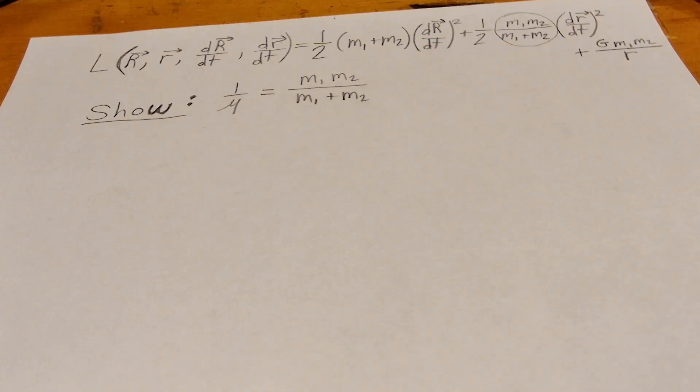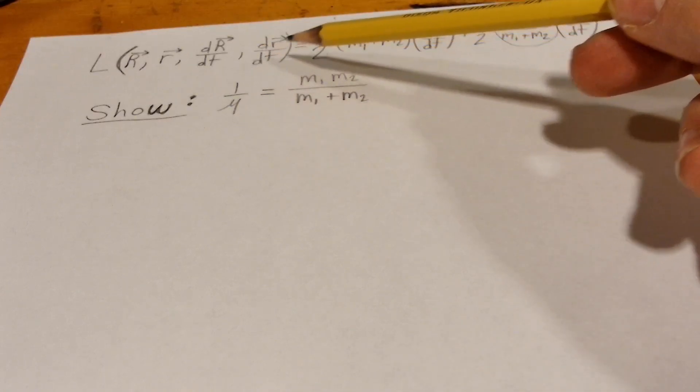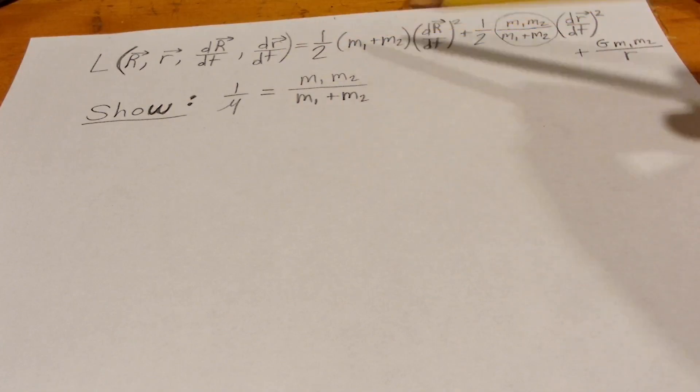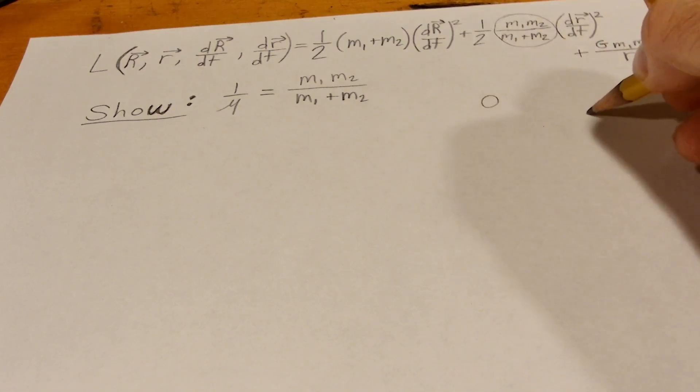Hello everyone. This is the Lagrangian of two masses orbiting each other. So just like this here,